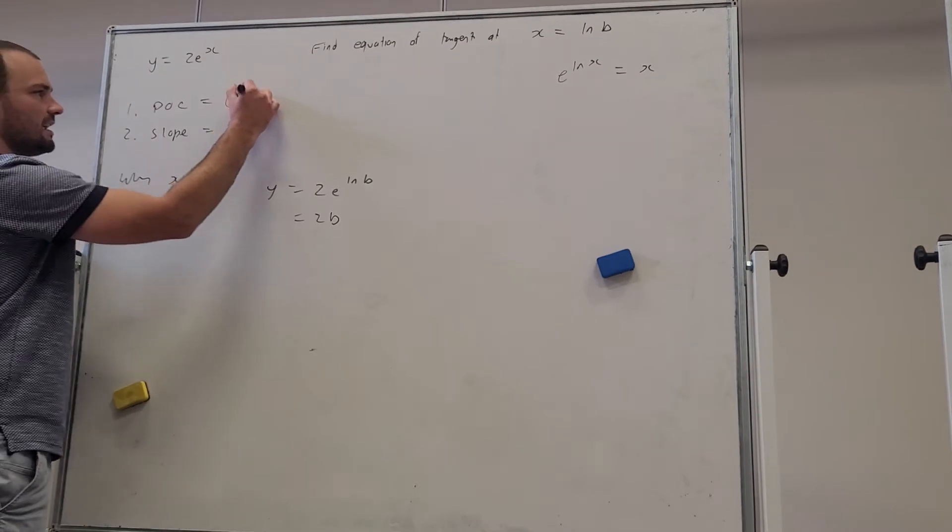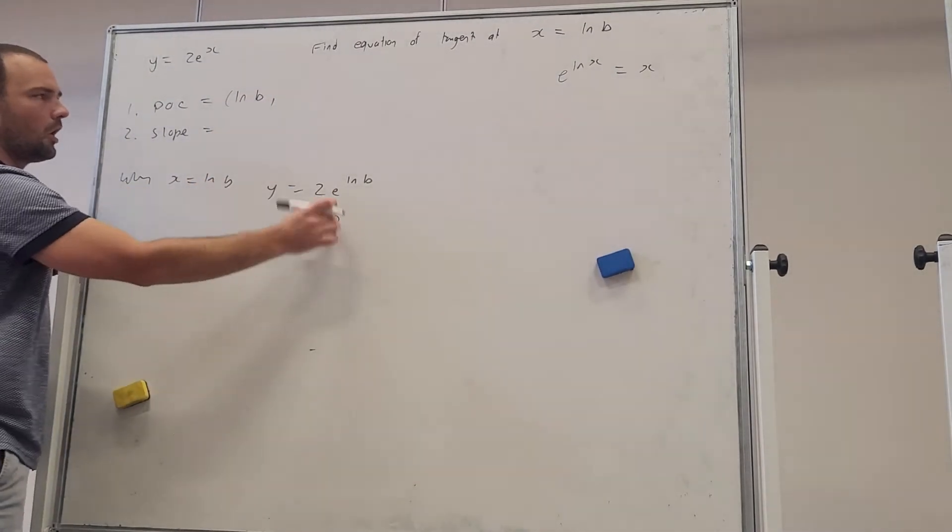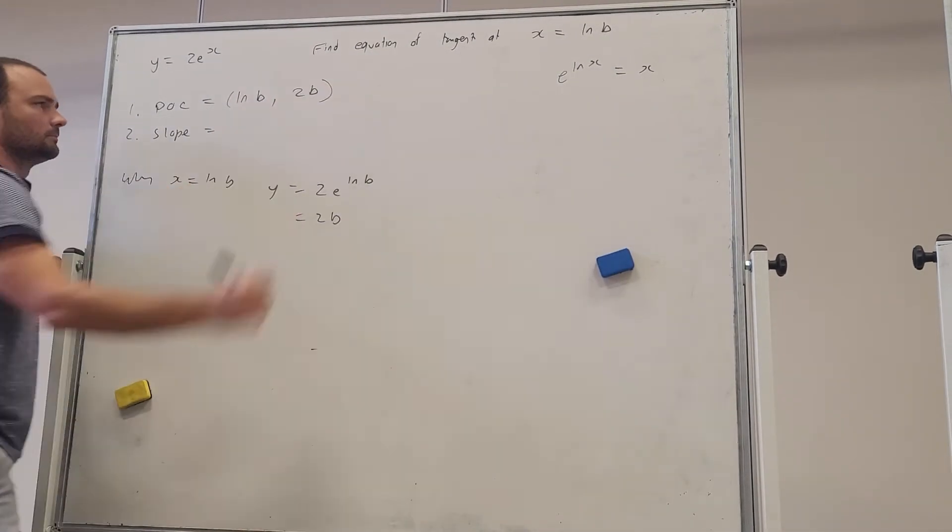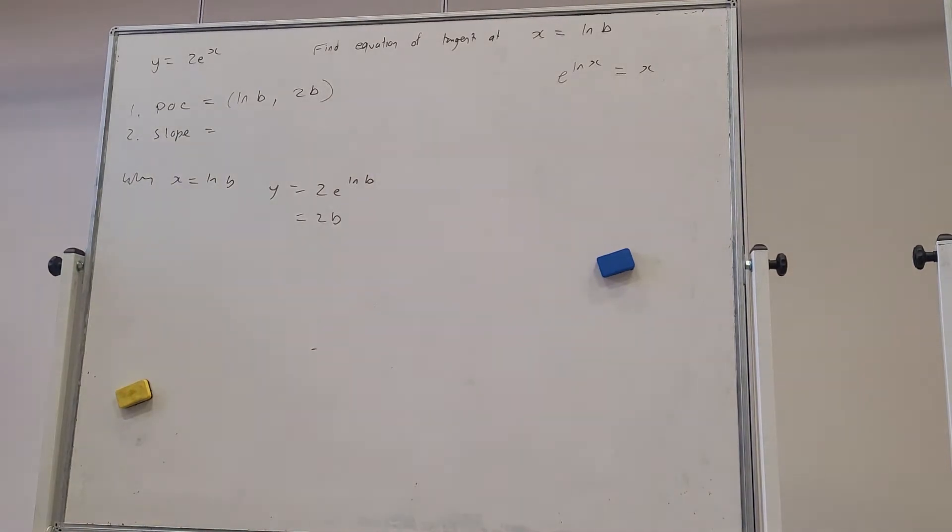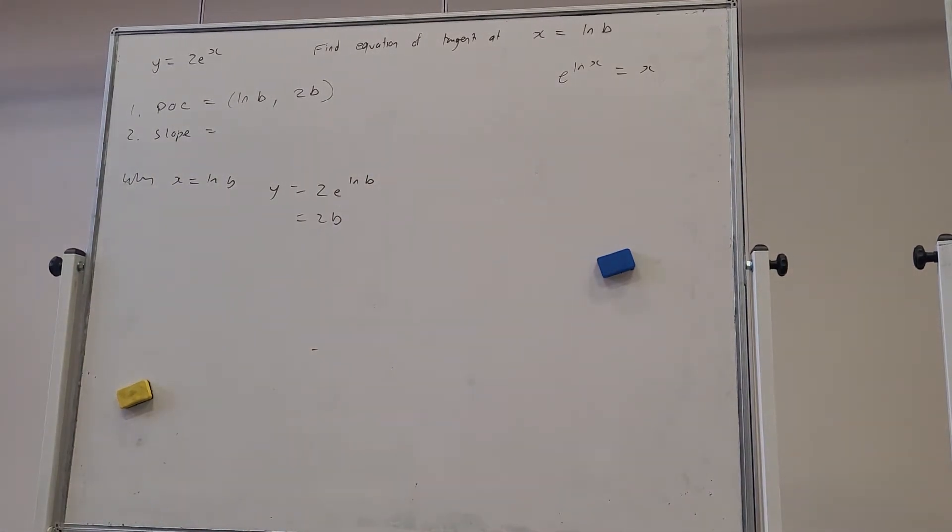And so this is our point of contact. x is ln b, y is 2b. Okay, first part done.